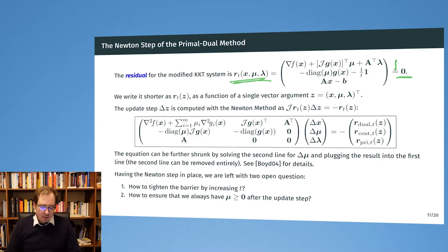We can describe this as a root-finding problem for which we saw the Newton method. We apply the Newton method, and here we again have the Jacobian of this residual function that we now express in just a single variable z, which contains both the primal and the dual variables.